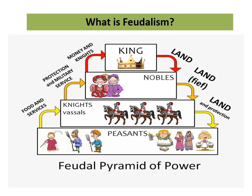Peasants used to give food and services to the knights. The knights used to give protection and military services to the nobles, and the nobles used to give money and knights to the king. This was the give-and-take relationship between the kings and the peasants, and this is how power was divided among the sections of society.